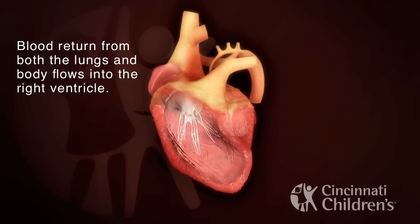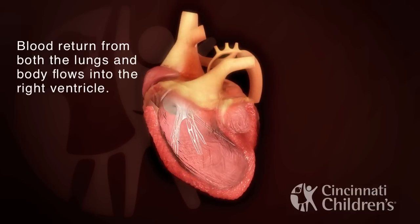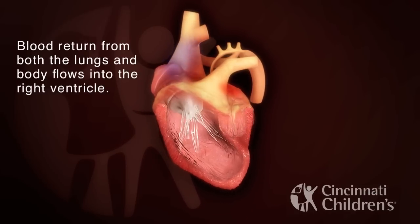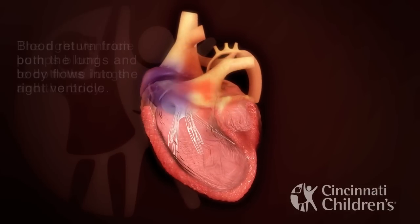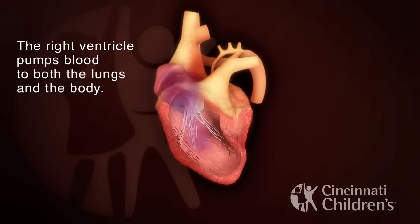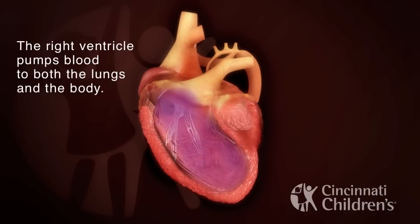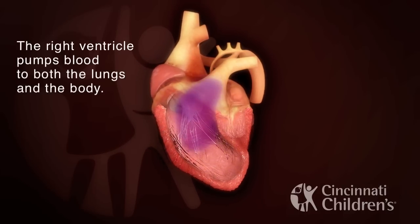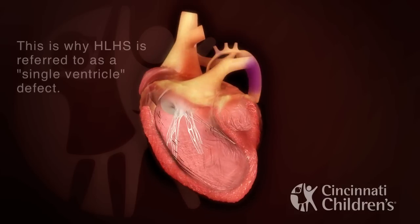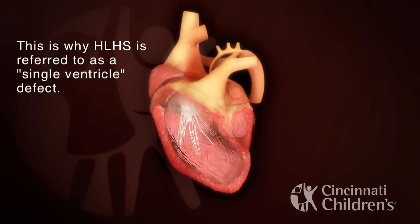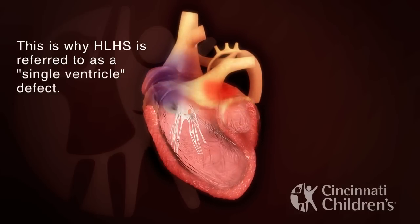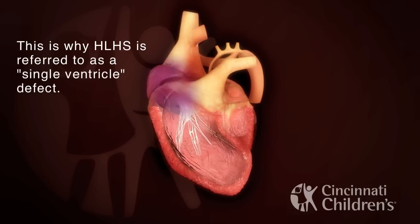Blood return from both the lungs and body flows into the right ventricle. The right ventricle pumps blood to both the lungs and the body. This is why HLHS is referred to as a single ventricle defect.